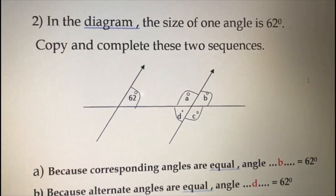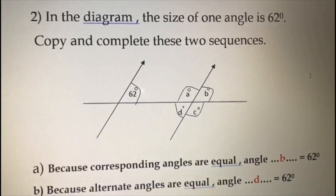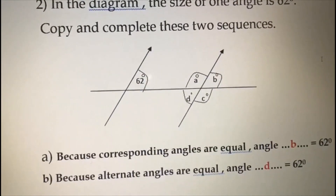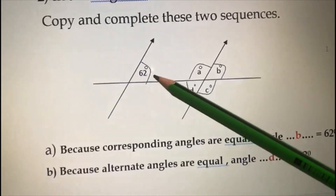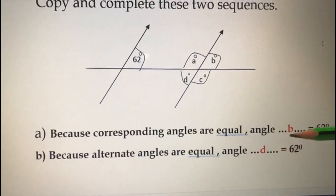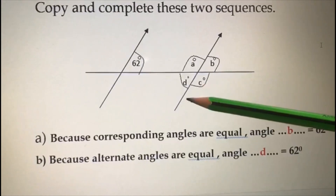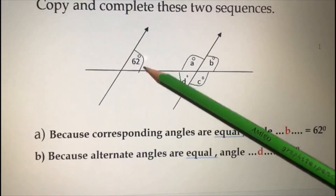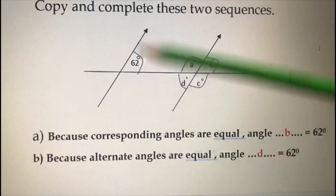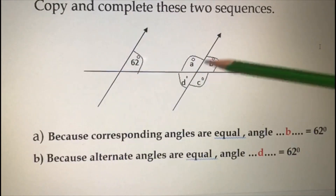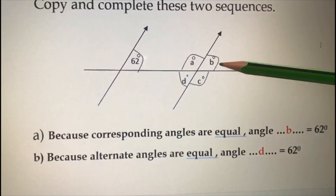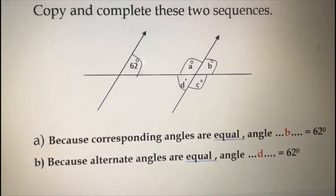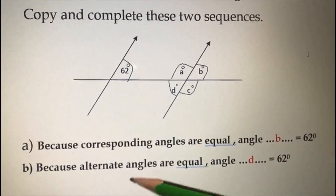Next question: in the diagram, one angle is 62 degrees. Two parallel lines with one transversal are given. You have to find angle B using corresponding angles, and angle D using alternate angles. For angle B — this angle is 62 degrees, think about F, draw F from here — so angle B is also 62 degrees, because corresponding angles are equal.